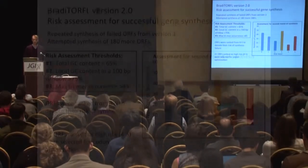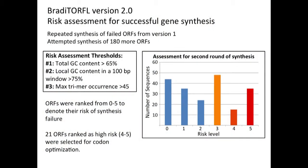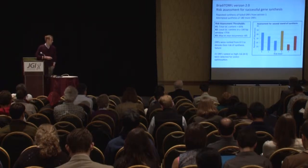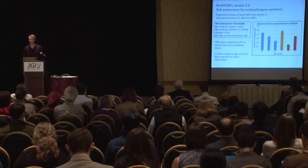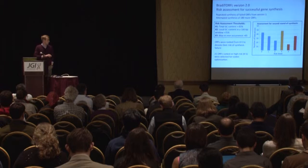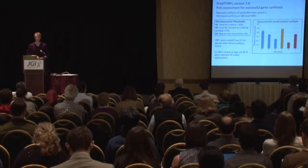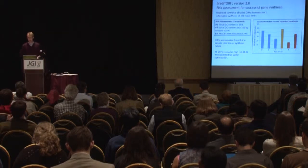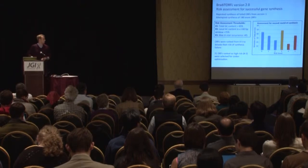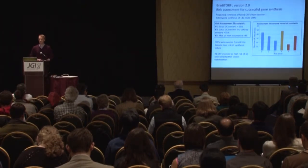These issues from the first round of synthesis really taught us a lot, and we applied those lessons in our second round. We established thresholds for characterizing the risk associated with synthesizing various ORFs: a total GC content above 65%, a localized sliding window above 75%, and a maximum trimer recurrence of more than 45 trimers in any given sequence. We used these red flags to rank the risk for each ORF — zero being perfectly well behaved, with increasing risk levels for sequences carrying one or more flags. For the most difficult ones ranked four or five, with two or more issues, we chose to codon-optimize those sequences.